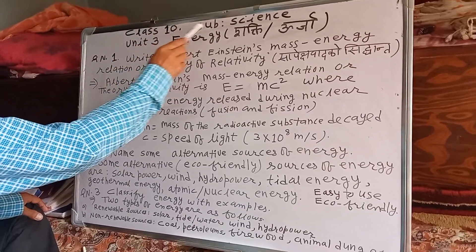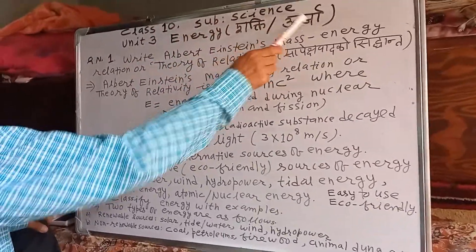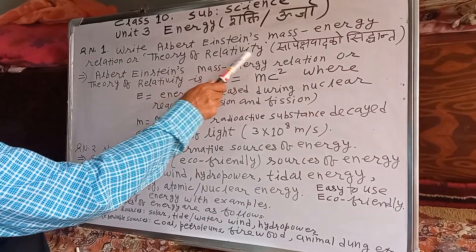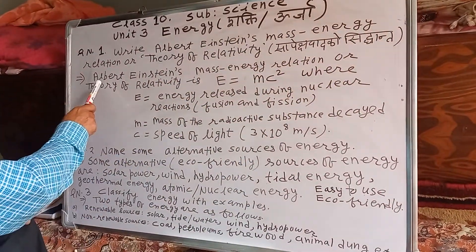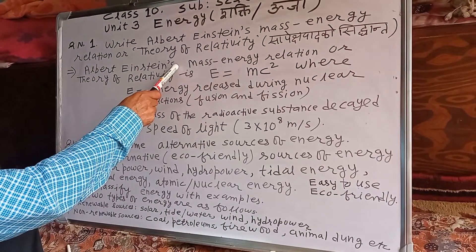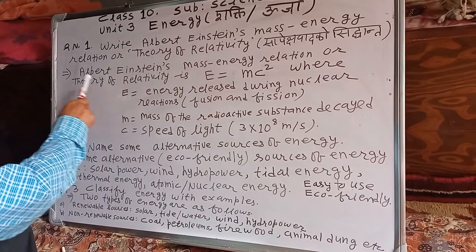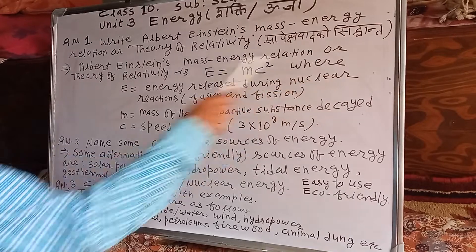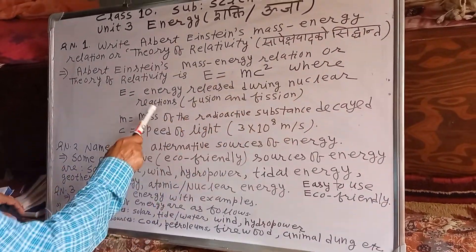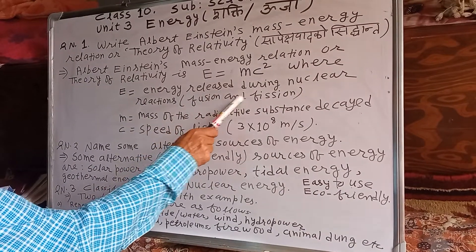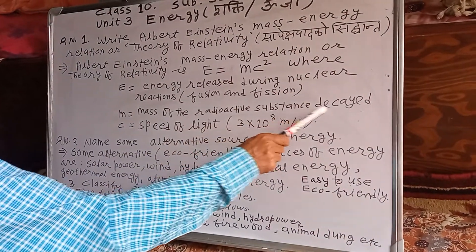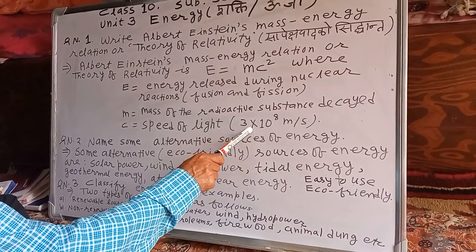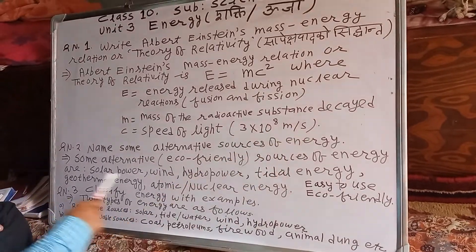Good morning, class 10. Subject: Science, Unit 3, Energy Safety. Question number one: Einstein's mass-energy relation, or theory of relativity. Einstein is a great German scientist. His mass-energy relation is E = mc², where E is the energy released during nuclear reactions — two types: nuclear fusion and nuclear fission. M is the mass of the radioactive substance decayed, and C is the speed of light, valued at 3 × 10⁸ meters per second.